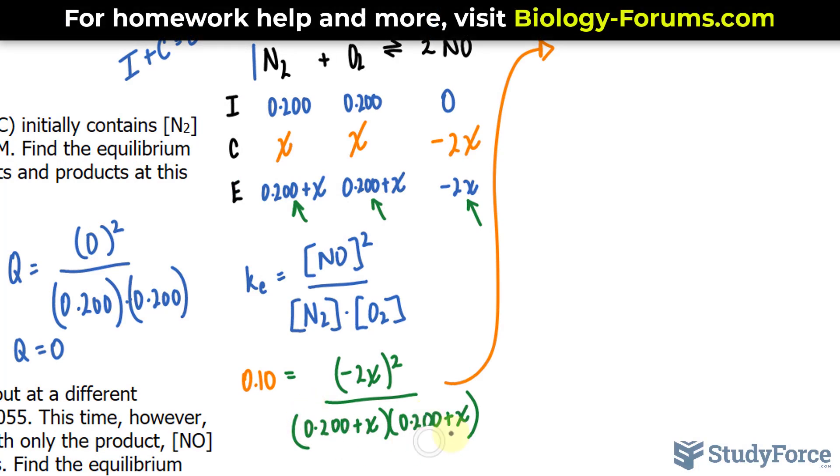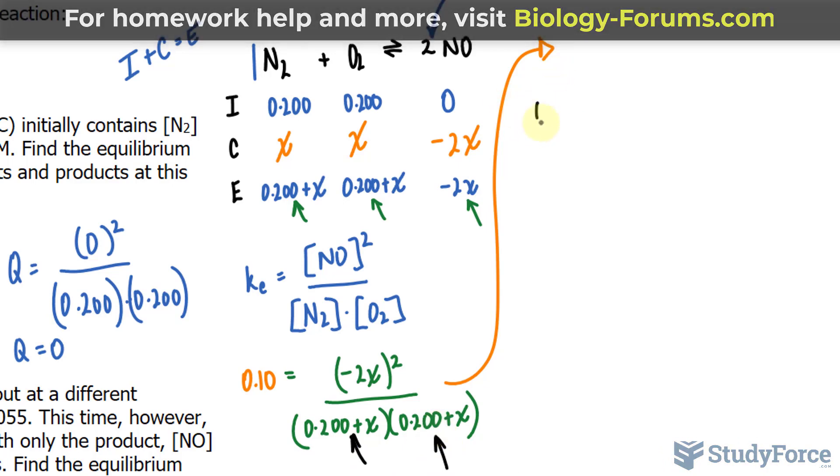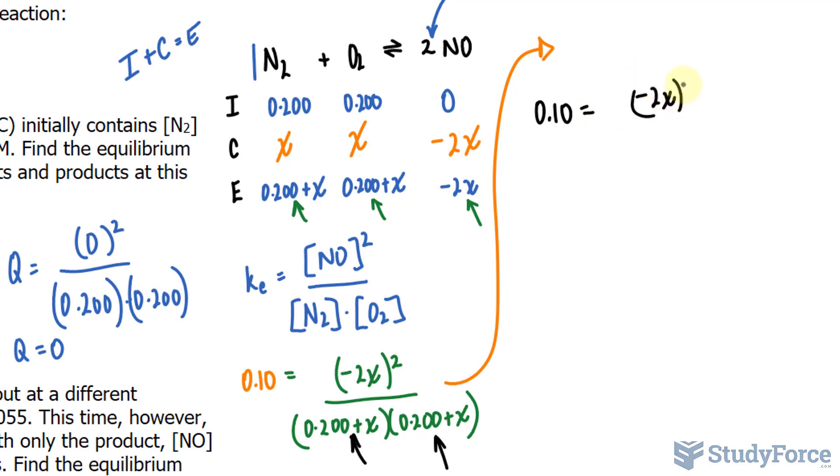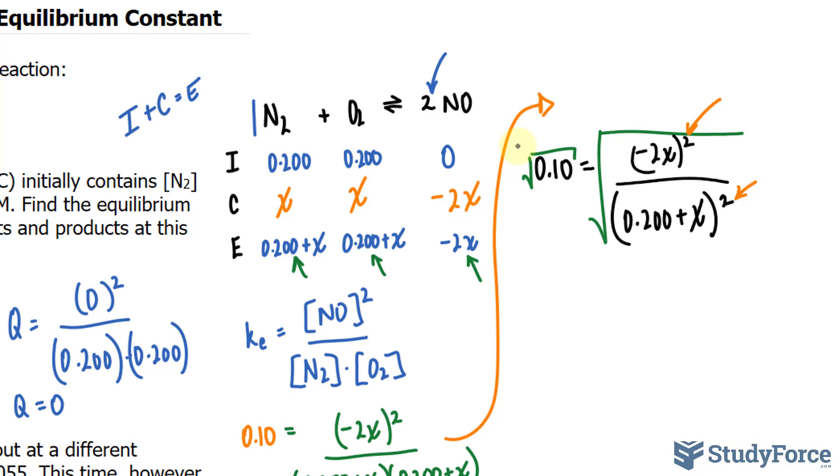Now comes the mathematical part of this question where we actually solve for X. Let's begin solving. As you can see, the denominator here, we have two factors that are identical. I can rewrite it starting from the left side: 0.10 is equal to negative 2X raised to the power of 2 over 0.200 plus X raised to the power of 2. Both this term and this term of the equation are being raised to the power of 2. I can get rid of that power of 2 by square rooting both sides. This leads us to the equation where the square root of any number can give you a positive or negative version of that number. So I'll write down plus minus the square root of 0.10, and on the right side we get negative 2X over 0.200 plus X.